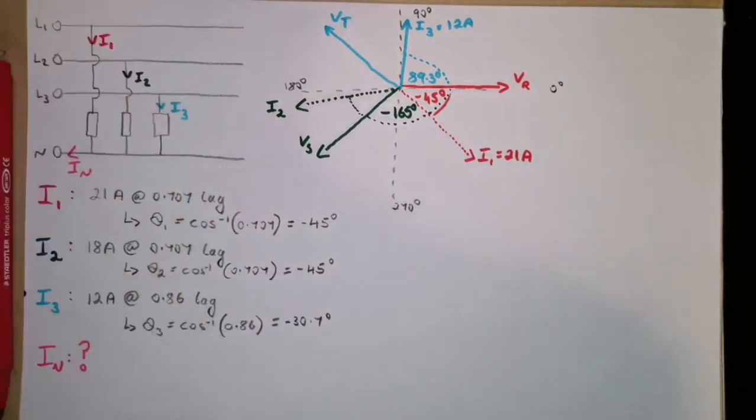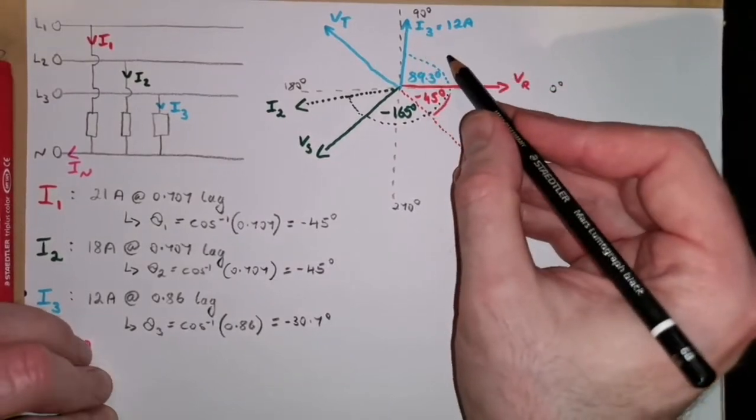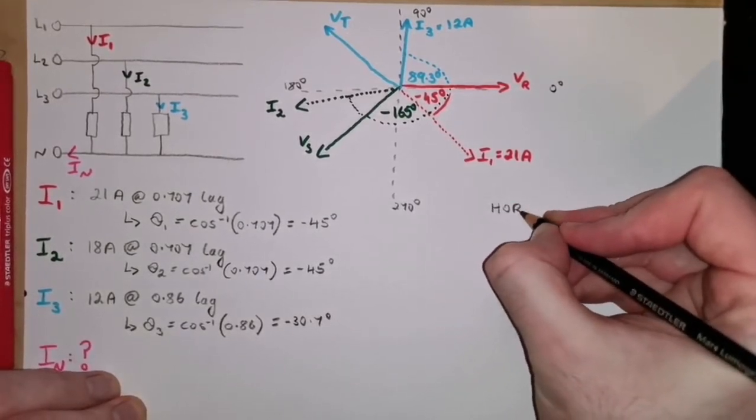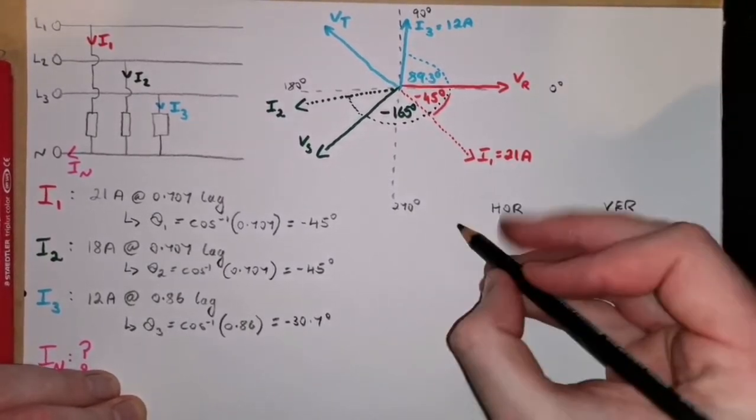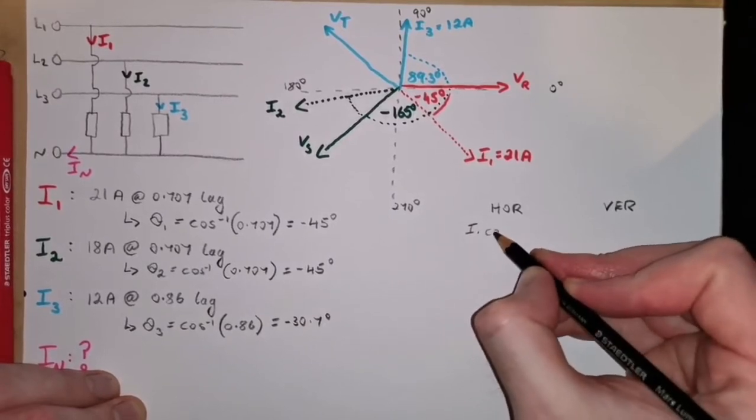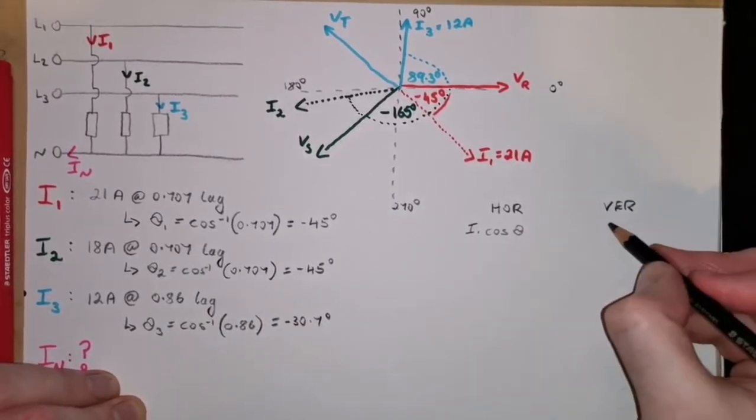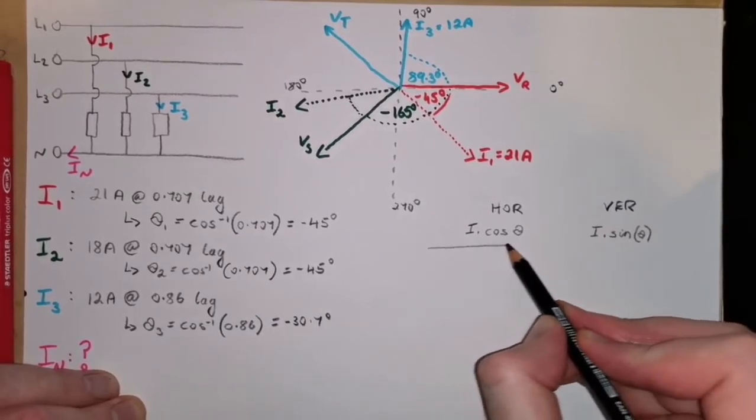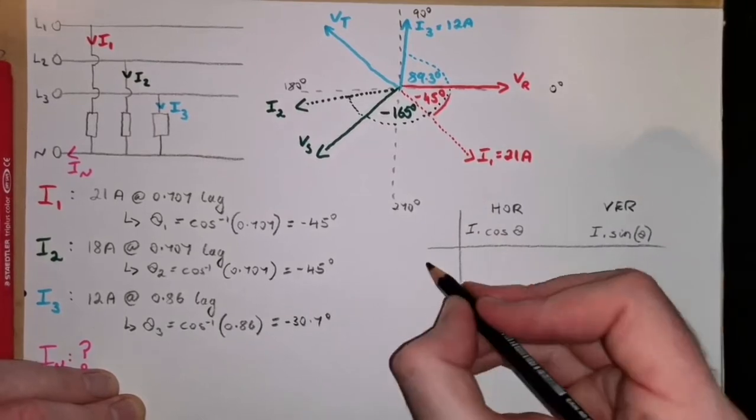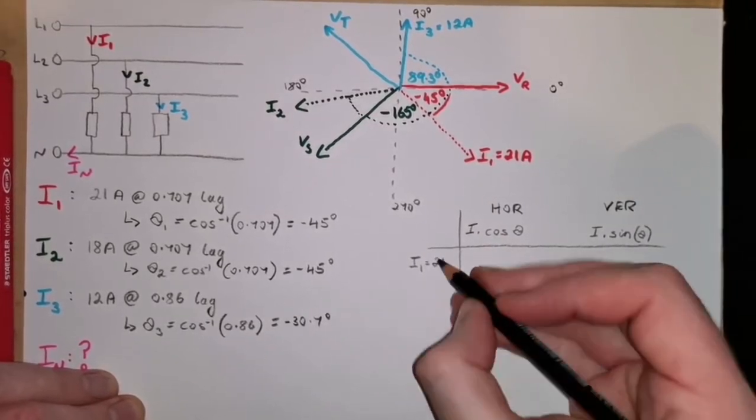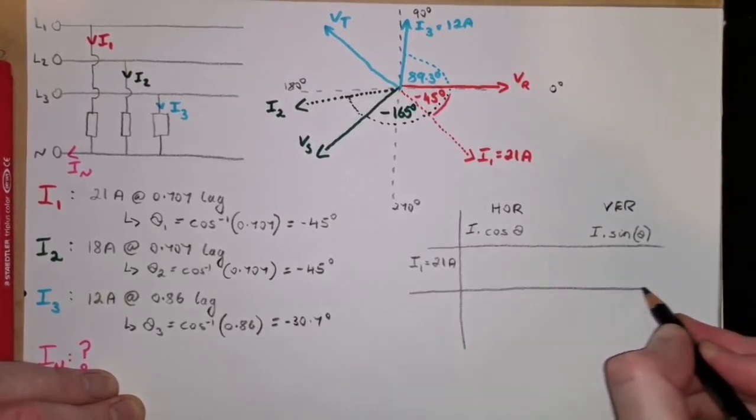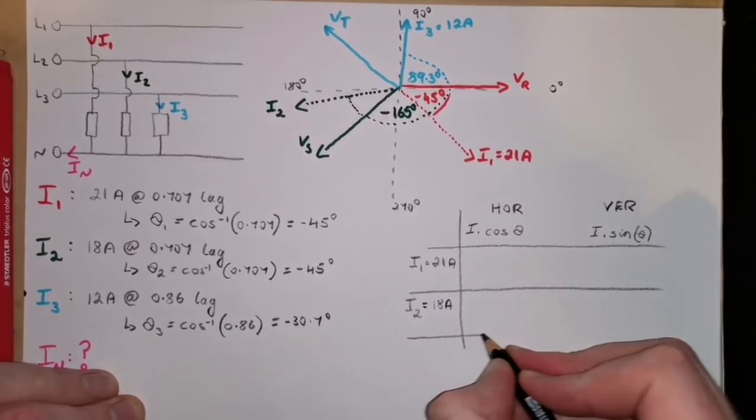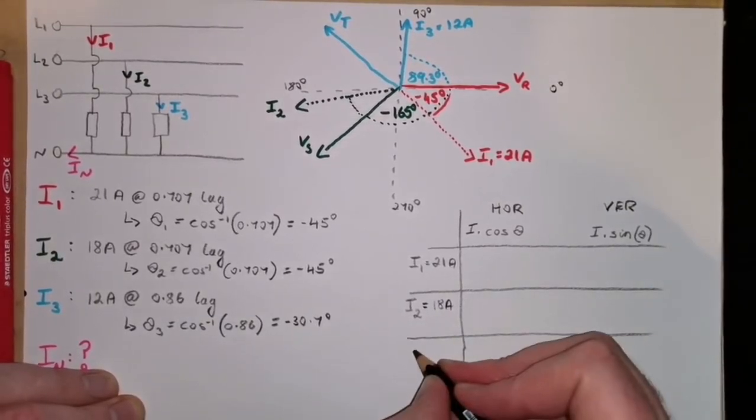Then, we approach the question, like we do with any of these, where we have multiple currents that aren't at right angles to each other. We have to work out the horizontal and the vertical components separately. So, I like to use a table, if I'm ever doing this, where if I want a horizontal element, it's I, the magnitude, times the cosine of the angle. And, the vertical element is I, times the sine of the angle. So, we've got I1 is equal to 21 amps. I2 is equal to 18 amps. And, I3 is equal to 12 amps.